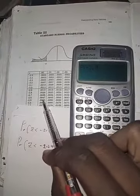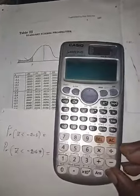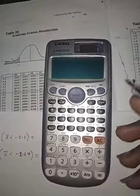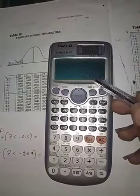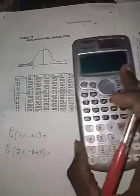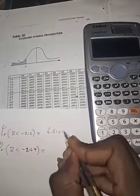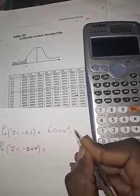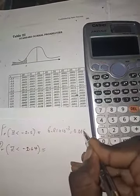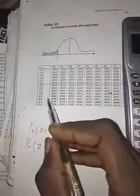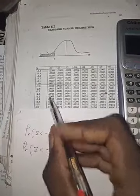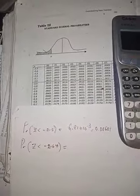Minus 2.5 is 0.0062 and that will actually give us an answer in standard form, which is 6.21 times 10 to the power of minus 3, and that is 0.00621, which is also the same thing with what you have here.